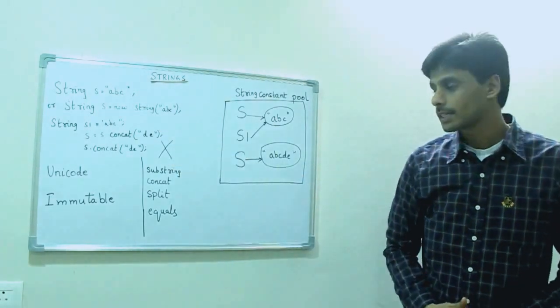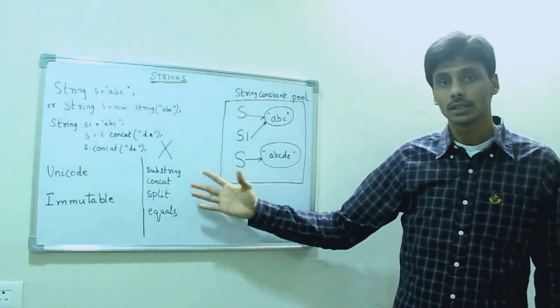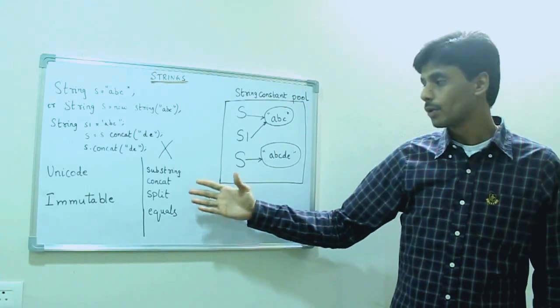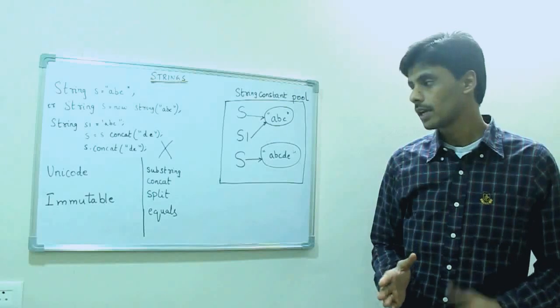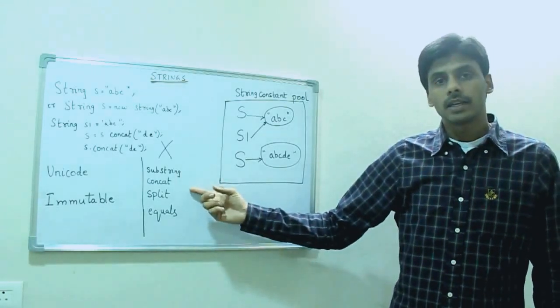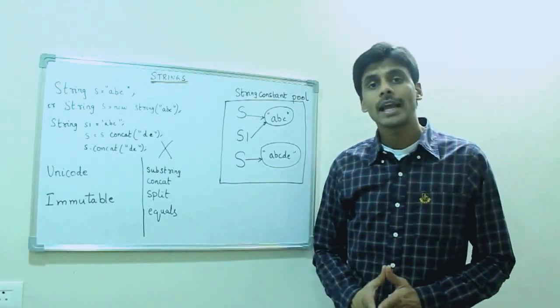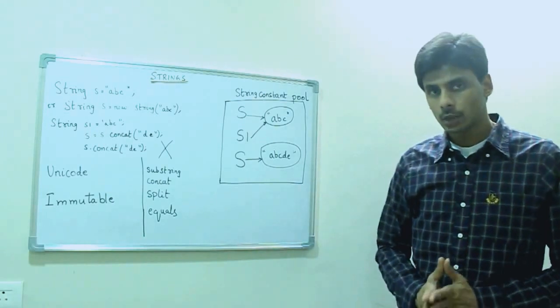The string class provides us with various useful methods. To name a few, the substring method allows us to create multiple pieces of a given string. The concat method allows us to concatenate two or more strings together into one single string.